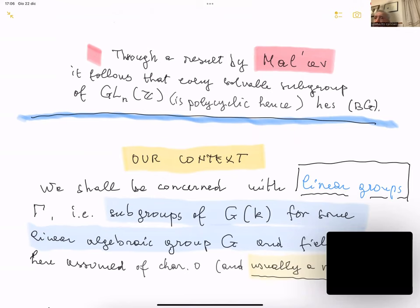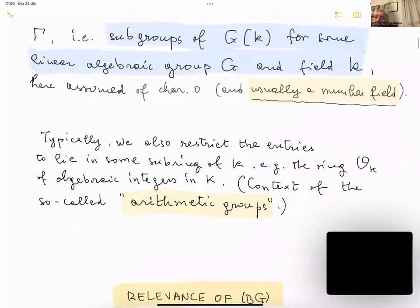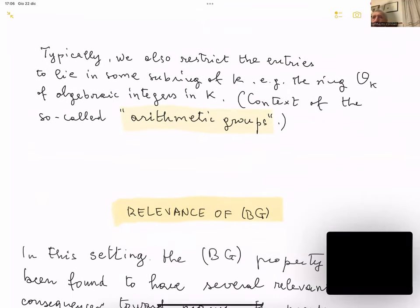Our context is near that of GL(m,ℤ) because we are concerned with linear groups. For me, a linear group means a subgroup of G(k), the k-rational points of an algebraic group G for some field k. We shall always assume the field is of characteristic zero, and usually it will be a number field. The matrix entries are restricted to lying in some subring of the field, typically the ring of integers of the number field k. This is the context of so-called arithmetic groups.